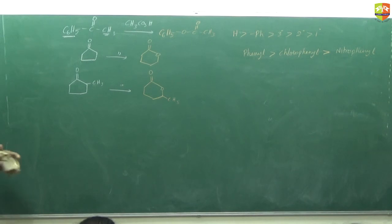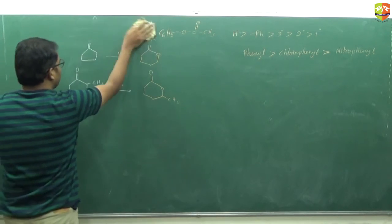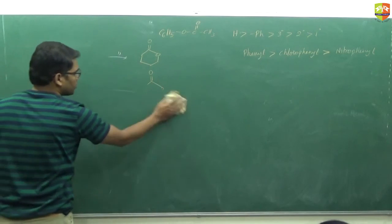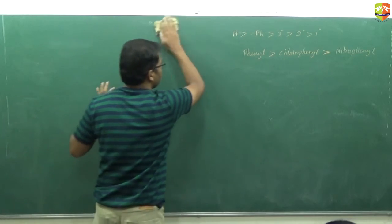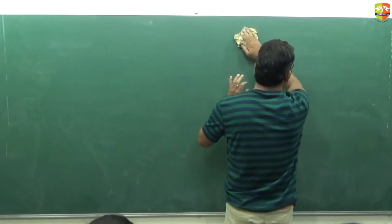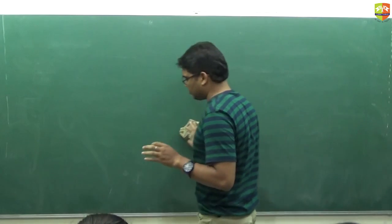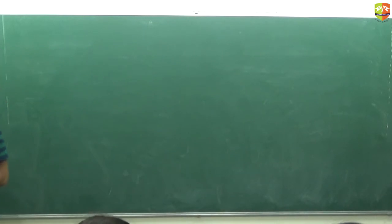This is the aldehyde and ketone. We'll take a break and then we'll see some reactions of carboxylic acid. Carboxylic acid - we have done most of the reactions, only few preparation methods we have and one or two reactions. That is it. Mostly today also we can finish acid.